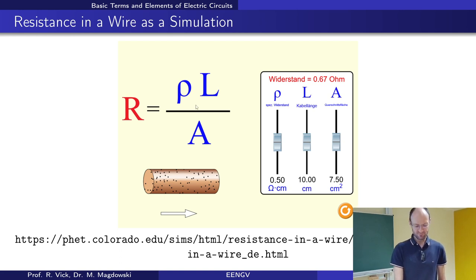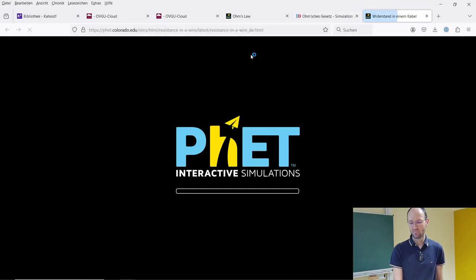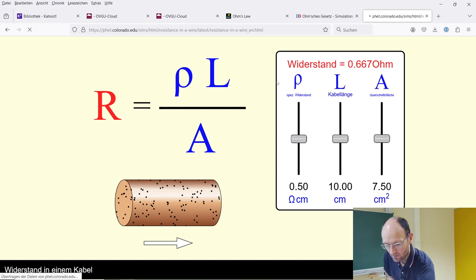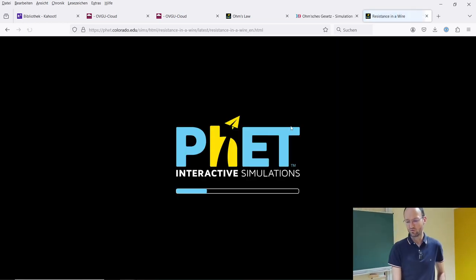And then now the next question is how to calculate resistance. To calculate resistance you need something that is called conductivity or resistivity. This is some property of the medium. You need length of the wire and you need the cross section area.